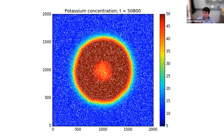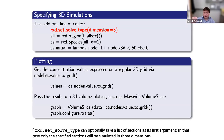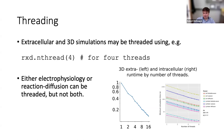Extending to three dimensions is essentially one line of code: rxd.set_solve_type(dimension=3) switches all reaction-diffusion simulations to 3D — though you probably only want to apply that to the region of interest. If doing extracellular and 3D intracellular, these are threadable: rxd.nthread(4) runs calculations with four threads, a form of parallelization that doesn't require understanding MPI (which NEURON also supports), and it scales reasonably well.